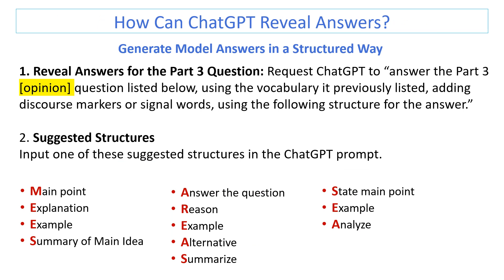Request ChatGPT to answer a Part 3 opinion question using the vocabulary it previously listed, adding discourse markers or signal words, and using a suggested structure. Input one of these suggested structures in the ChatGPT prompt. MIES: Main point, Explanation, Example, Summary of main idea. AREAS: Answer the question, Reason, Example, Alternative, Summarize. SIA: State main point, Example, Analyze.